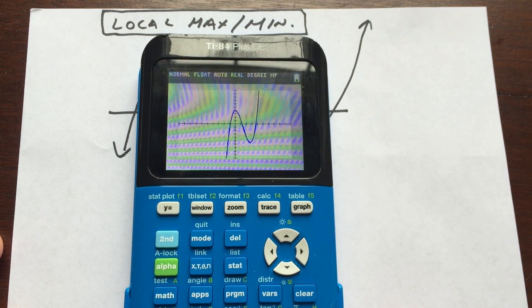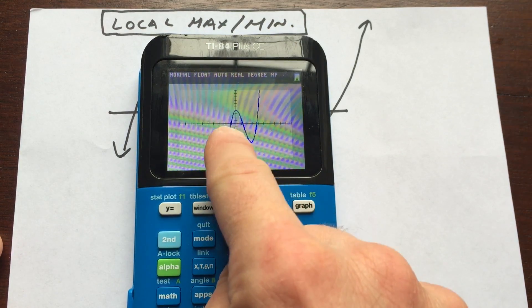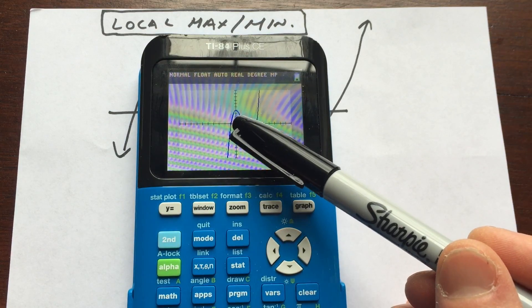Okay, so there's the graph of the equation. And what I'm going to do now is I want to find that high point right there, so that local maximum.